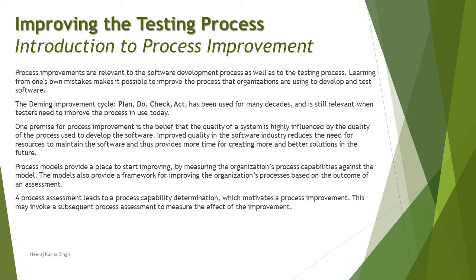A process assessment leads to a process capability determination which motivates the process improvement, and this may invoke a subsequent process assessment to measure the effect of the improvement. The process assessment is the first and foremost thing you need to start with in order to analyze what areas and critical points need improvement, then apply the capability determination — what kind of improvements can actually be made. After applying improvements, you conduct another assessment to check how effective your steps were, and if not sufficient, you look for something more to meet your expectations.